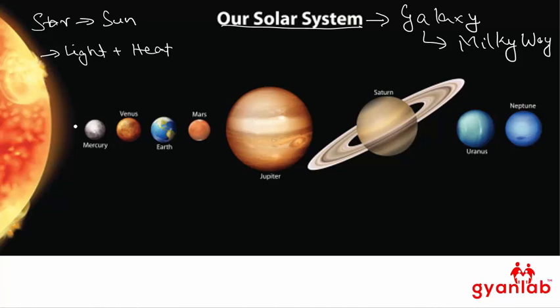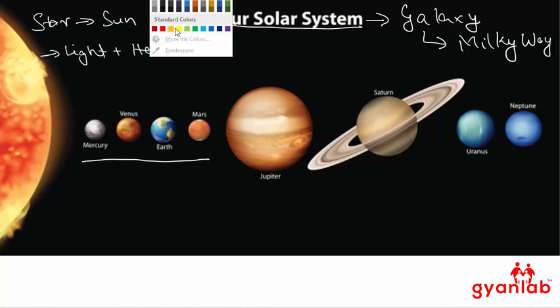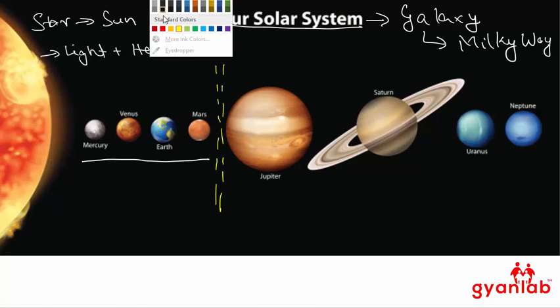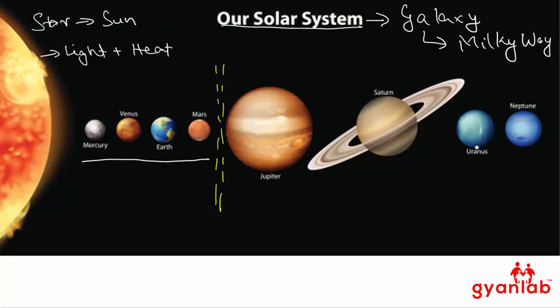Planets present in the solar system are basically the inner four planets, which are rocky planets. Then we have an asteroid belt in the middle here between Mars and Jupiter, and then we have four other planets which are known as the gaseous planets.